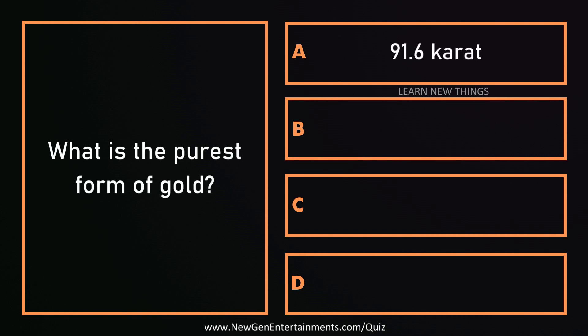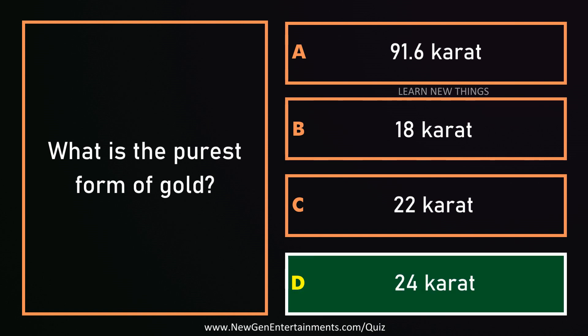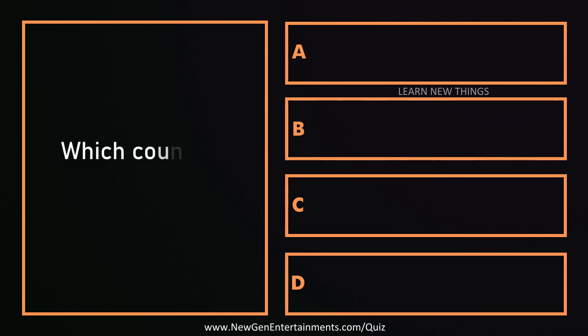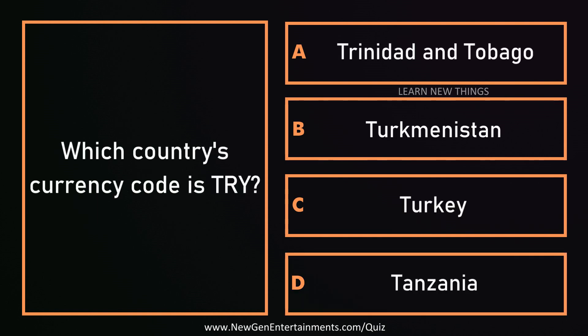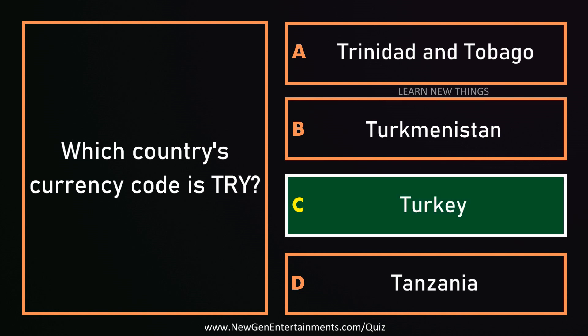What is the purest form of gold? 24 carat. Which country's currency code is TRY? Turkey.